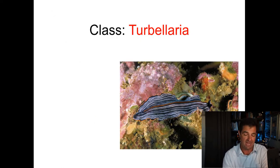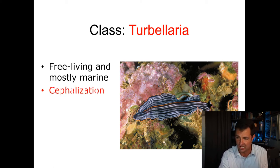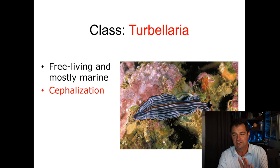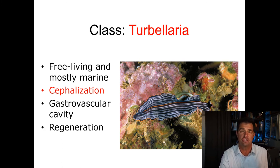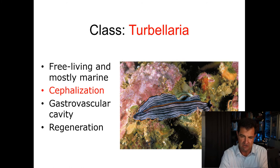The first class within phylum Platyhelminthes is the Turbellaria — these are mainly the free-living, mostly marine flatworms. Some are on land, but many are in the ocean. Many of them are very colorful. They're one of the first groups of animals to demonstrate cephalization, basically the idea that organisms now have a head used for sensing the environment and interpreting things. They also have a gastrovascular cavity and a really good ability to regenerate — studies have shown that if you cut the head in half, it can grow two heads. There's a lot of research on these animals trying to figure out if that regeneration can be applied to other things.